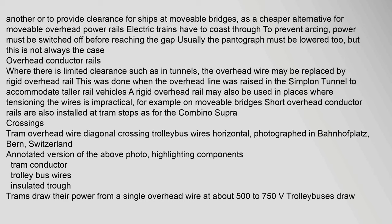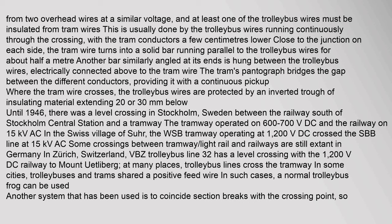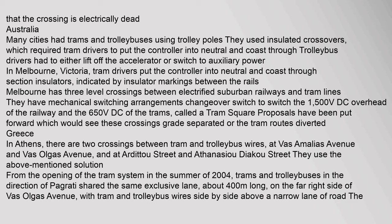Where tram and trolleybus overhead wires cross at a similar voltage, at least one of the trolleybus wires must be insulated from tram wires. This is usually done by the trolleybus wires running continuously through the crossing, with the tram conductors a few centimeters lower close to the junction on each side. The tram wire turns into a solid bar running parallel to the trolleybus wires for about half a meter. The tram's pantograph bridges the gap between the different conductors, providing continuous pickup, while the trolleybus wires are protected by an inverted trough of insulating material.